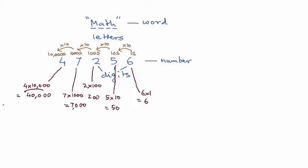So if you open up the number, it's 40,000 plus 7,000 plus 200 plus 50 plus 6 and they all add up to give you the total value of this number which is 47,256. And this is called the expanded form of the number.